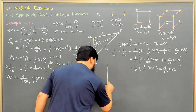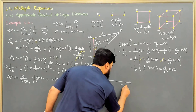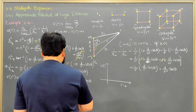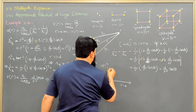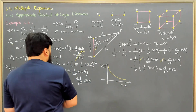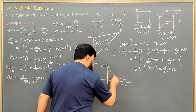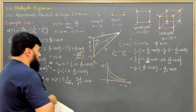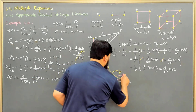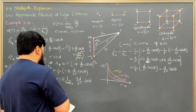If we plot V(R) versus R, the monopole potential falls as 1/R, while the dipole potential falls as 1/R², meaning it drops much quicker than the monopole term.